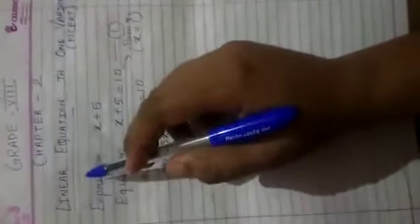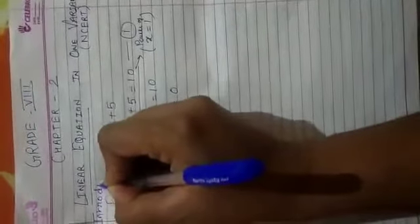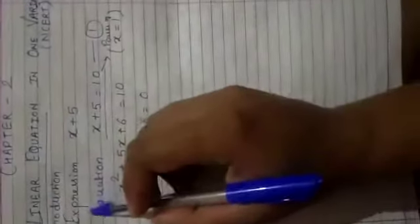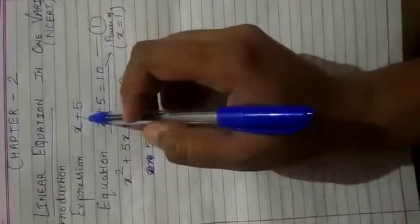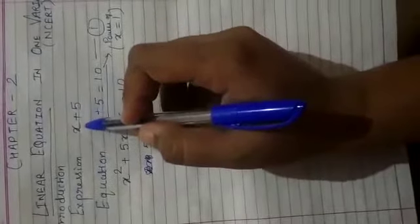Now first of all we just go through introduction of the chapter. What is given here? First thing you know about expression. Expression means the value that is given in the form of expression like x plus 5. So this is called expression.